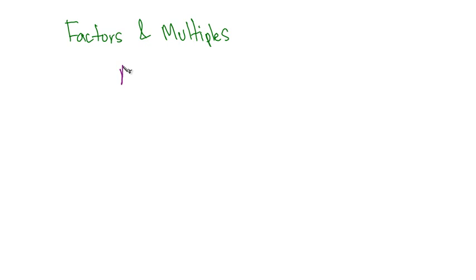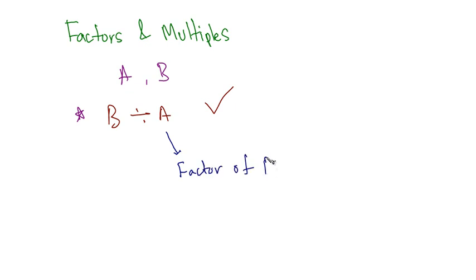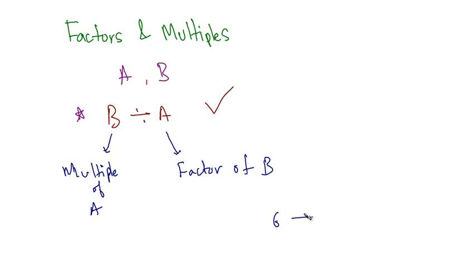Let's say there are two numbers a and b, and the condition given is that b is divisible by a. If this holds true, then a is the factor of b and b is a multiple of a. So if anyone says that a is a factor of b, it means a can divide into b. If I have to calculate the factors of 6, they come out to be 1, 2, 3, and 6, because all of these numbers can divide into 6.